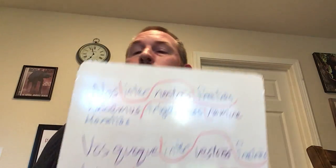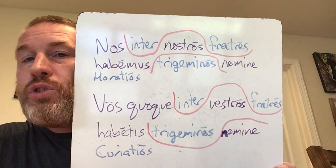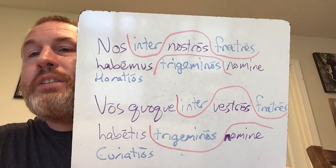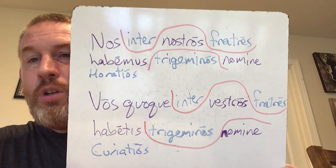Cunctis Romanis and Cunctis Albanis are the same looking, but they're different grammatically. And what I really want to point out is if you take a look at line seven: Nos inter nostros fratres habemus Trigeminus Trigeminus Trigeminus Nomine Coratios.